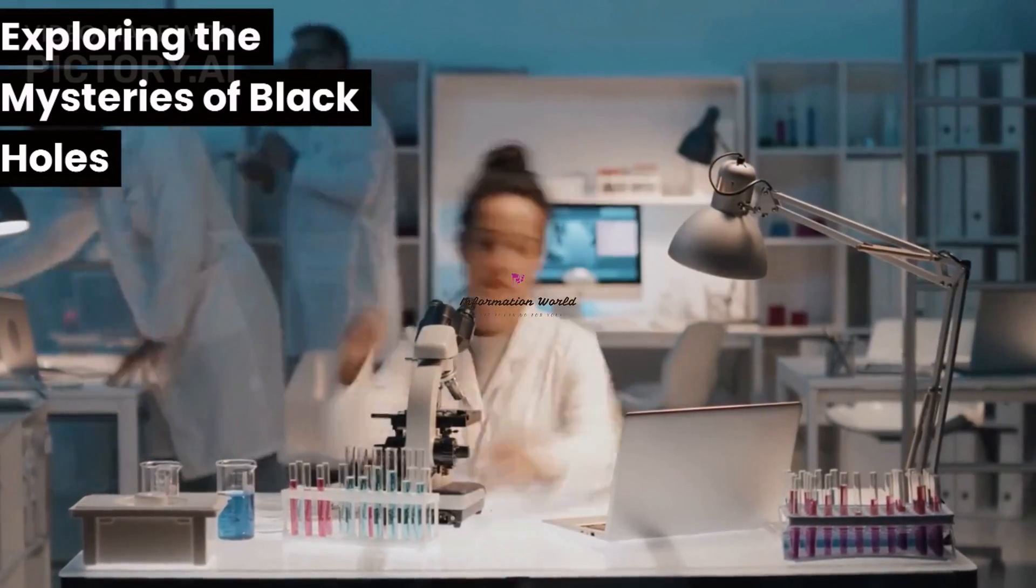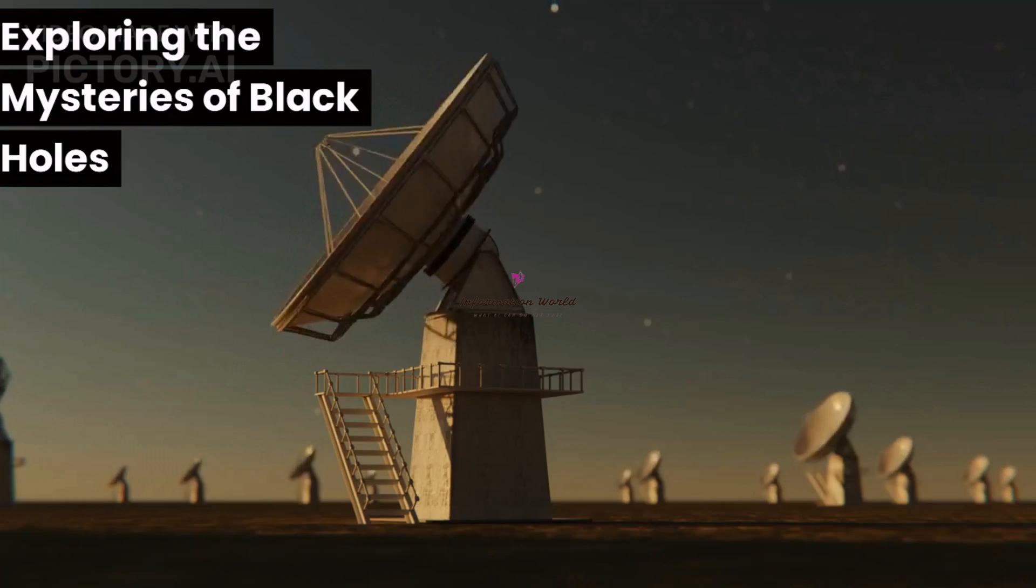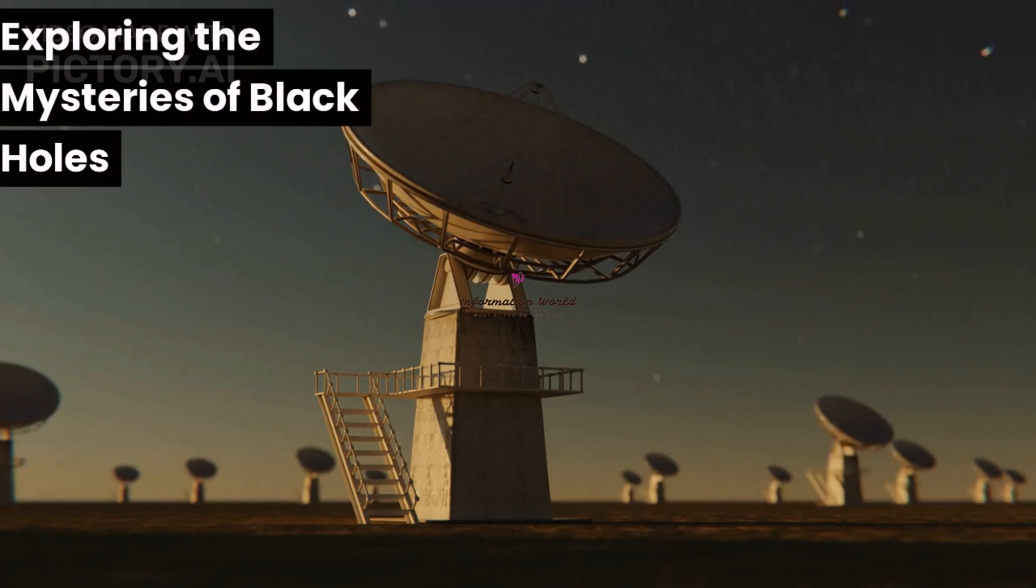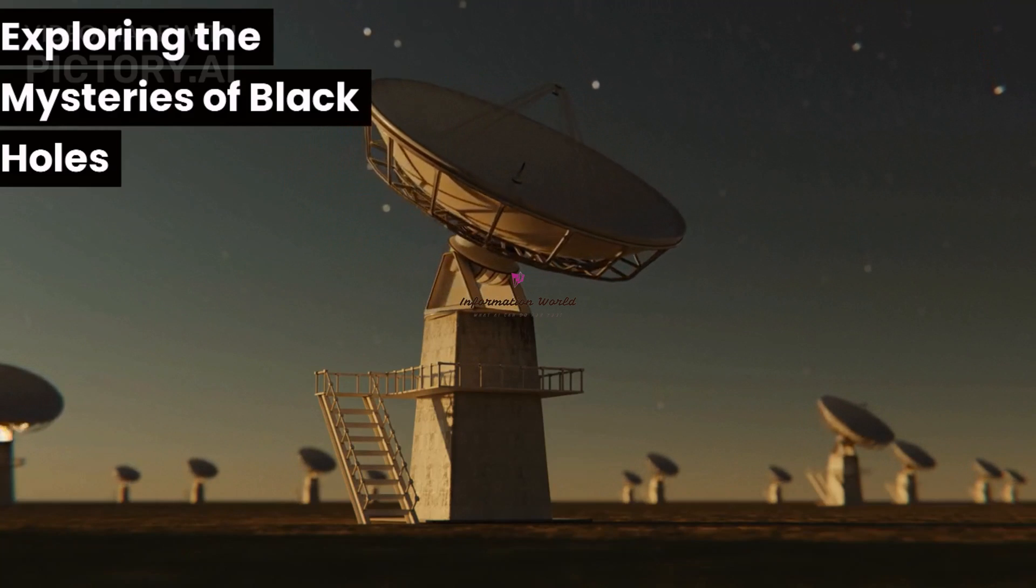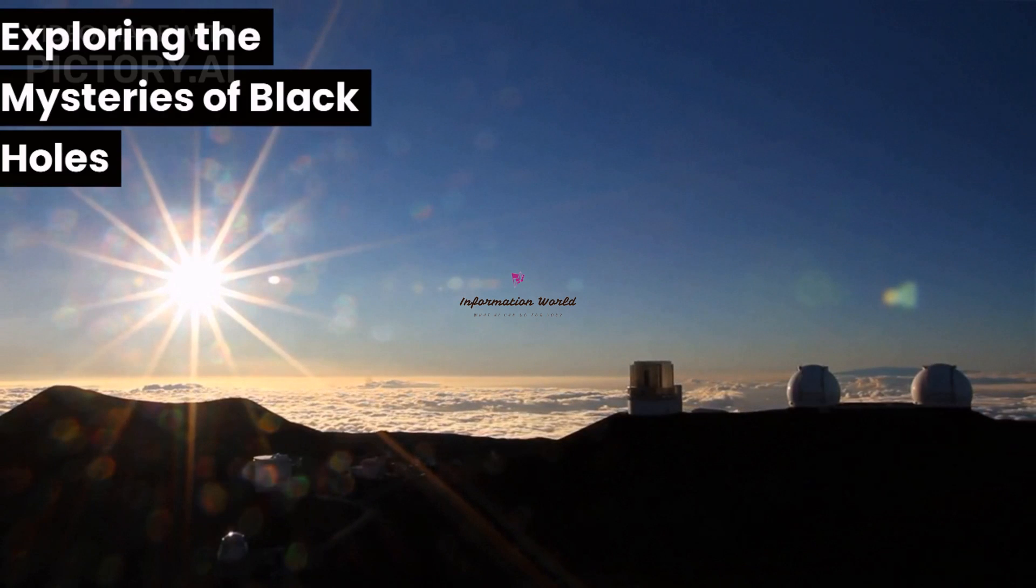Studying black holes is no easy task since they cannot be observed directly. Instead, scientists use various methods such as X-ray and radio telescopes to detect the effects of black holes on their surroundings. For example, when gas falls into a black hole, it heats up and emits X-rays that can be detected by telescopes.